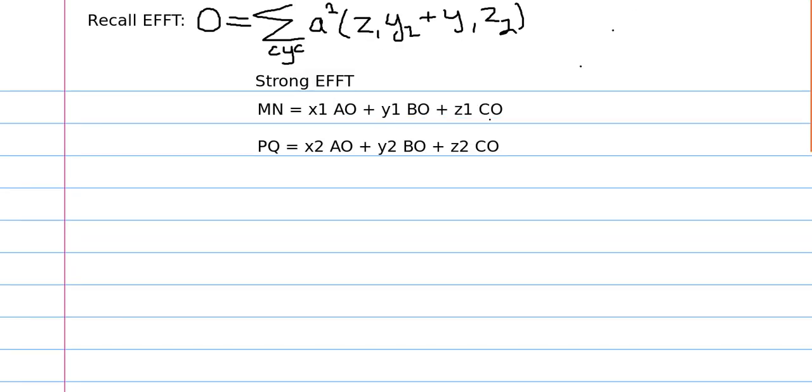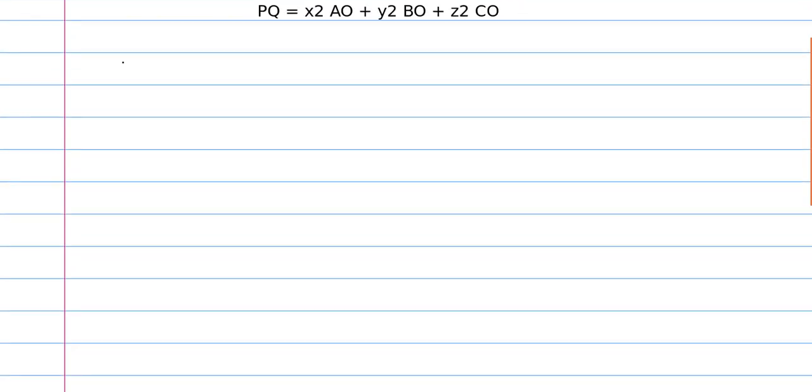And so, since they were displacement vectors, we knew that x1 plus y1 plus z1 was equal to x2 plus y2 plus z2 was equal to zero. And in my proof of EFFT, I sort of did a manipulation at the end, where the right-hand side, we had r squared times this cyclic sum.